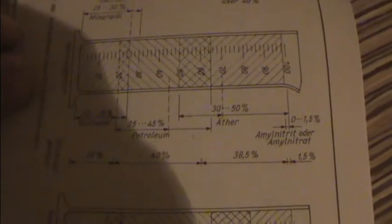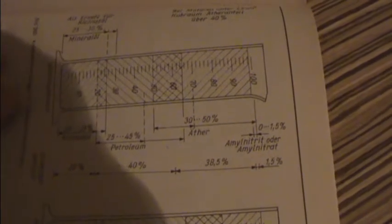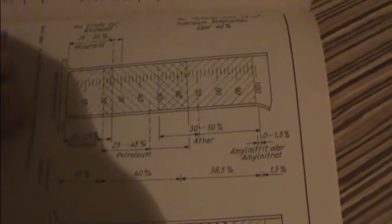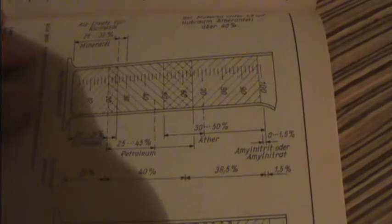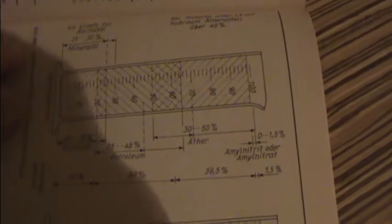Next mixture is universal mixture. And there is 20% of castor oil, 40% of petroleum, 38.5% ether, and 1.5% amyl nitrite.